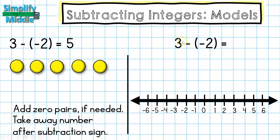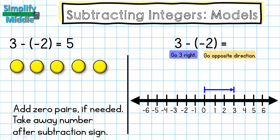On the number line, I'm going to go 3 to the right starting at 0. From there, I'm going to go the opposite of negative 2. So instead of going 2 to the left, I'm going to go the opposite — 2 to the right — and I will land at 5.